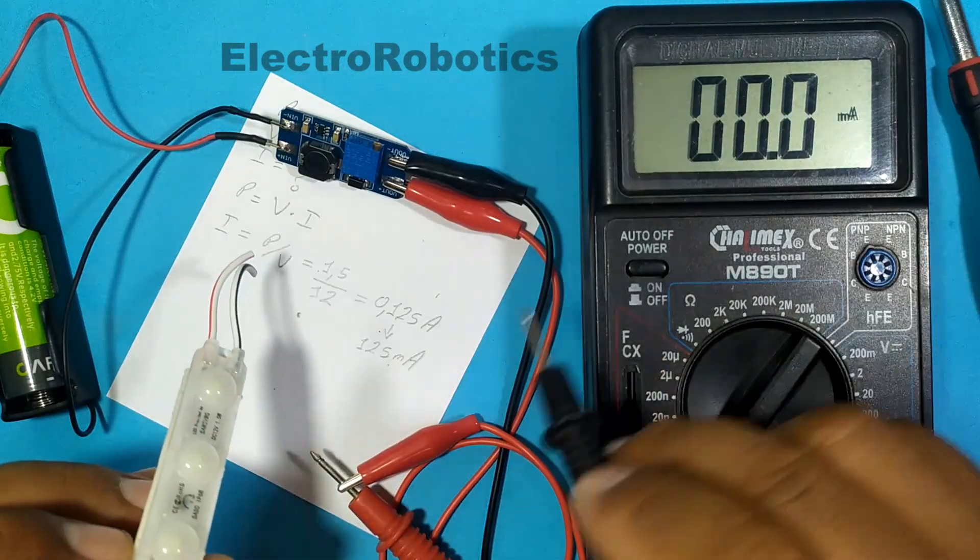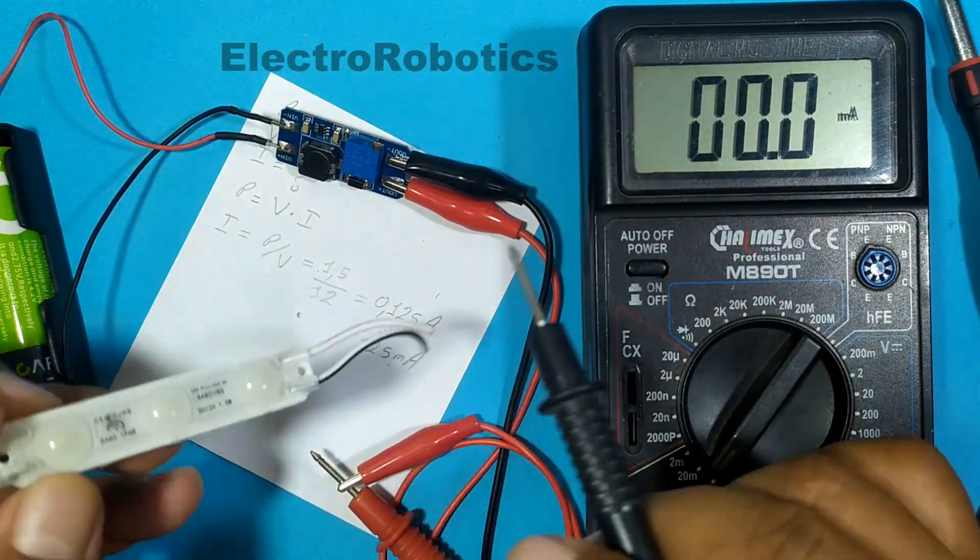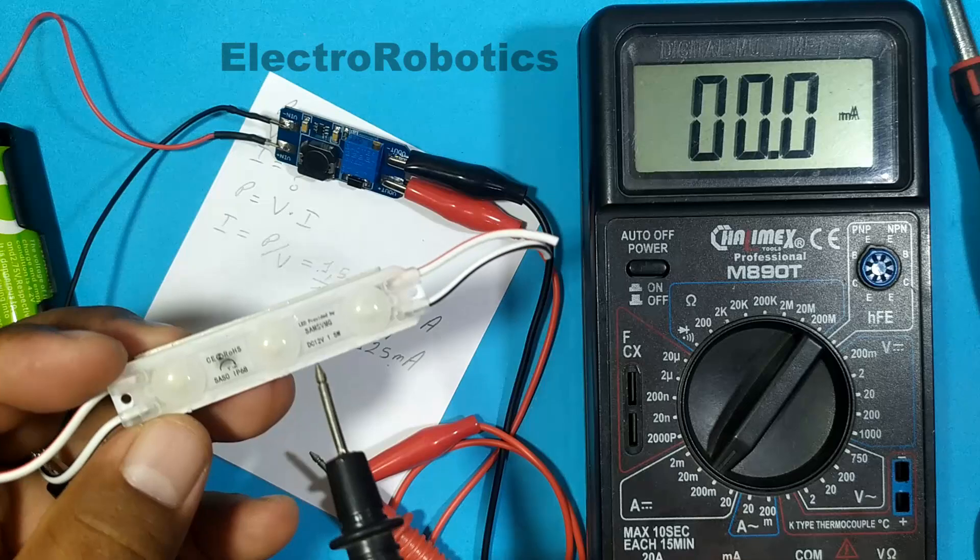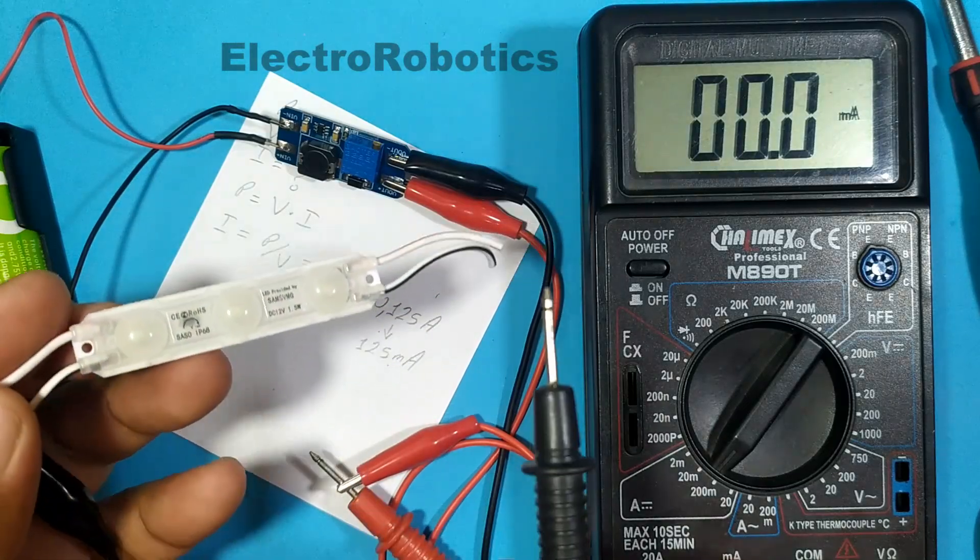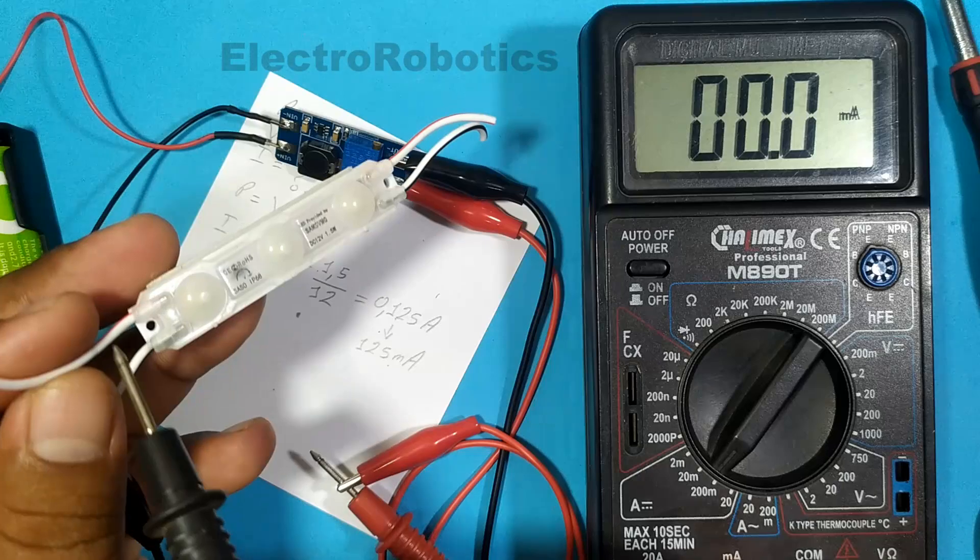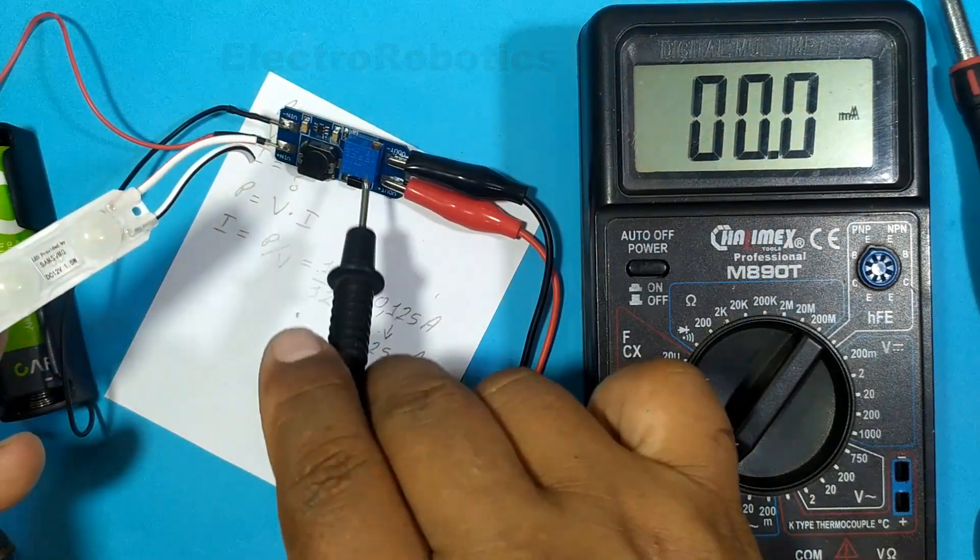The value is very similar to the calculated one. Well, with this the power of the module is confirmed. Now let's solder the cables of our module directly to the voltage booster.